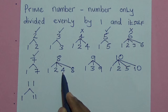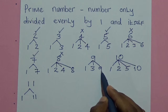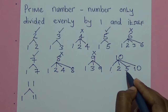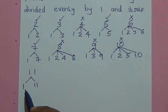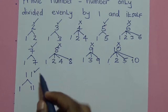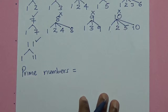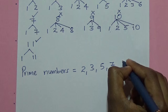8 can be divided by 1, also by 2, by 4, and by 8, therefore it is not a prime number. 9 can only be divided by 1 and 3, therefore it is not a prime number. 10 can be divided by 1, by 2, by 5, and by 10, meaning it is not a prime number. 11 can only be divided by 1 and 11, therefore this one is a prime number. So among these numbers, the prime numbers will be 2, 3, 5, 7, and 11.